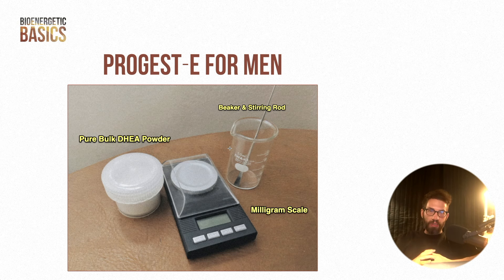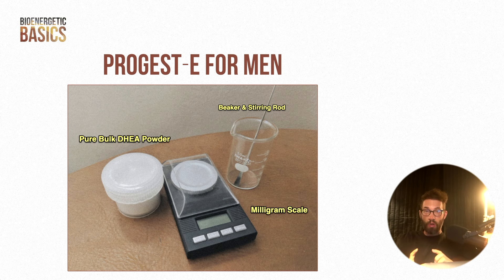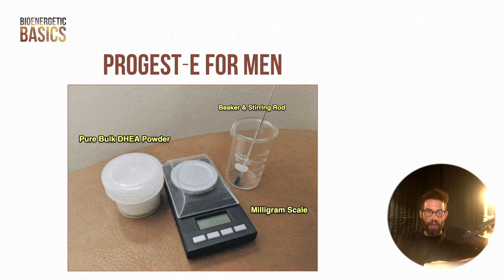If a guy uses progesterone and likes it, he can mix it with DHEA. You can buy pure bulk DHEA and a milligram scale, measure the DHEA into a beaker, pour in the Progest-E, and mix with a stirring rod. Each bottle of Progest-E contains 3,400 milligrams of progesterone. You can make a one-to-three, one-to-five, or one-to-six ratio — whatever you want. It's important not to exceed roughly 5 milligrams of DHEA. I personally use a one-to-one mixture of progesterone to DHEA.